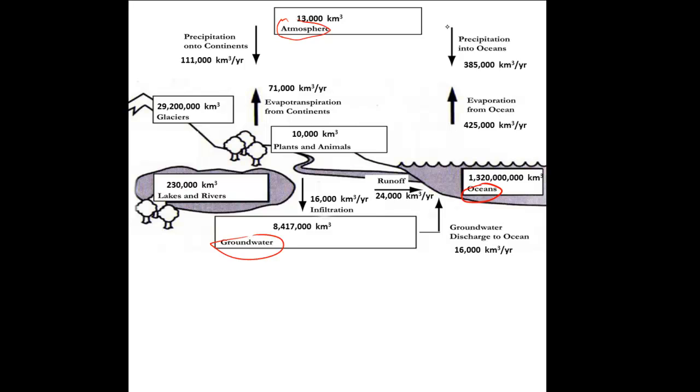And we also have processes. Processes like precipitation, like evaporation, and so forth. Those processes are broken down depending on what reservoir they're moving water in between. For example, we have evaporation from the ocean to the atmosphere. We have evaporation from the continents and biosphere to the atmosphere.